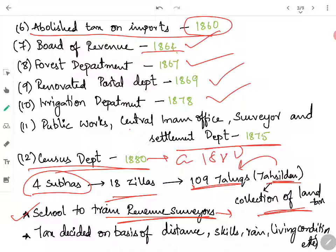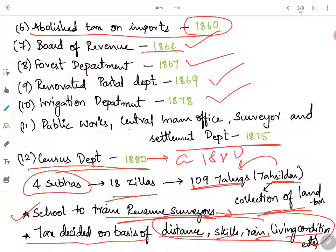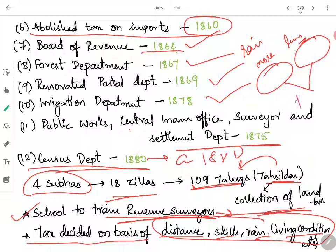He established schools to train revenue surveyors, as surveying for tax purposes was a complicated process. He established a school on how to survey, distribute land, and levy taxes on farmers. Taxes were decided on the basis of distance, skills, rainfall, and living conditions. For example, higher rainfall means higher crop yield and lower rainfall means lower crop yield — it would not be justifiable for both farmers to pay the same tax. So rainfall was made a factor in determining taxes.